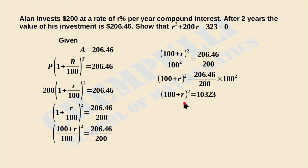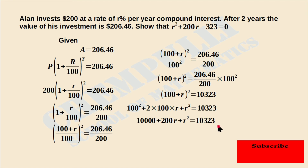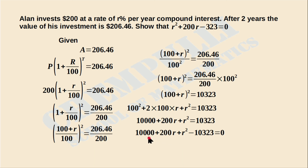Expanding (100 + R)² using the identity (A + B)² = A² + 2AB + B², we get: 100² + 2×100×R + R² = 10,323, which is 10,000 + 200R + R² = 10,323. Moving 10,323 to the left-hand side: 10,000 + 200R + R² - 10,323 = 0. Since 10,000 - 10,323 = -323, we get R² + 200R - 323 = 0.